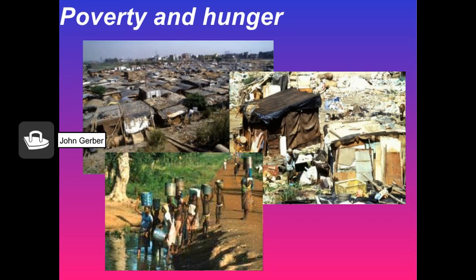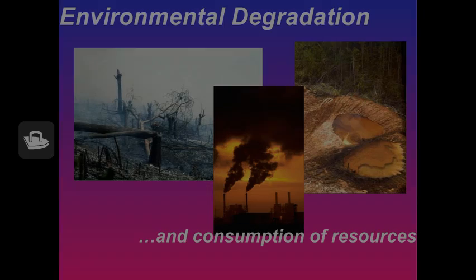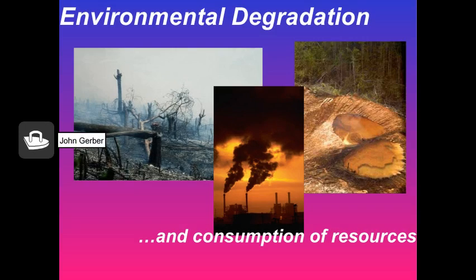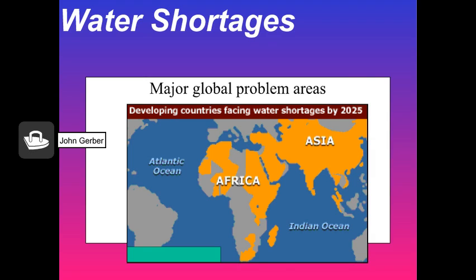The direct — or sometimes indirect — result of too many people and too many resources being used by individuals are hunger and poverty, globalization and a loss of opportunity for small businesses, and of course environmental degradation and overconsumption of resources. We're aware of overconsumption of energy resources, but water may be the most limiting factor on the planet in the near future.